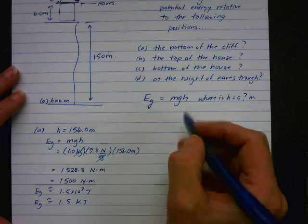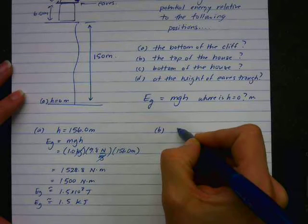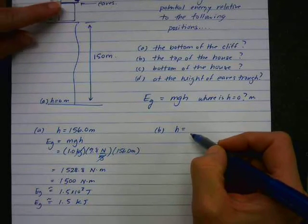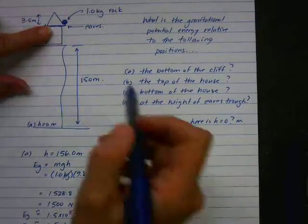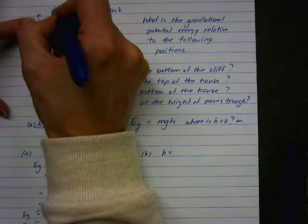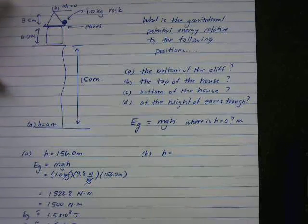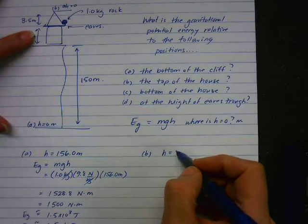Now for B, the top of the house, h is actually, we'll see that the rock is actually below the reference point. So here for B, h is equal to 0 at the very top of the house. So h is a negative value. It's negative 3.5 meters. That negative just indicates it's a measurement below.